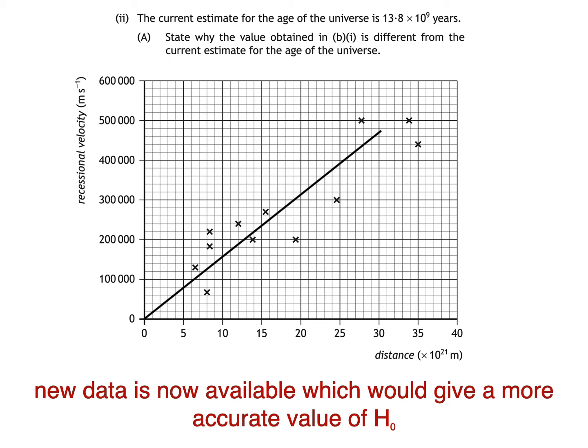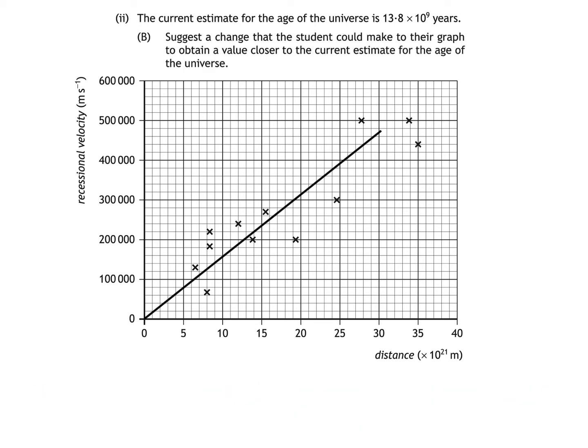The second part of B part 2 asks us to suggest a change that the student could make to the graph to obtain a value closer to the current estimate for the age of the universe. Two possible answers are that the student could draw the correct line of best fit. Just as well it's you who's doing higher physics, and not them. Or, you could write that the student could use more current data.